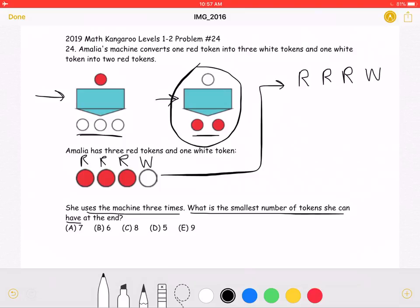Therefore, when we have three reds and one white, we are going to do one white token for two red tokens. So this is the first conversion out of three.